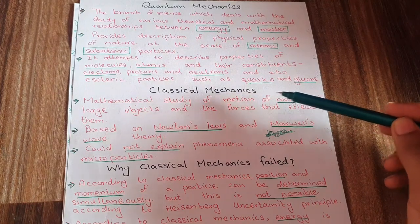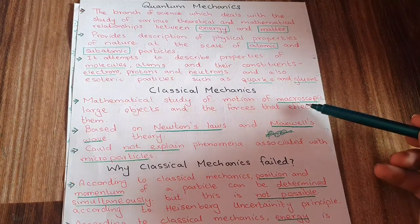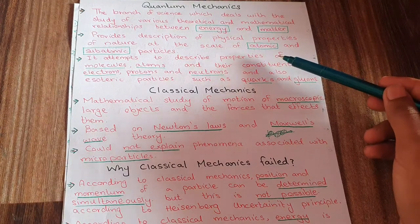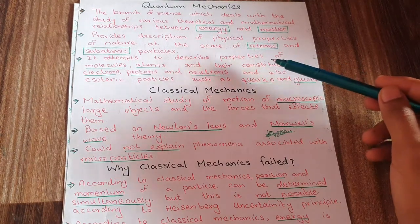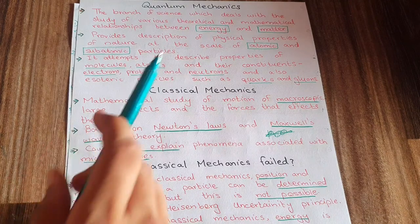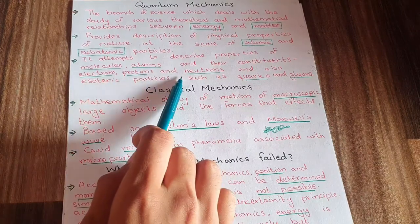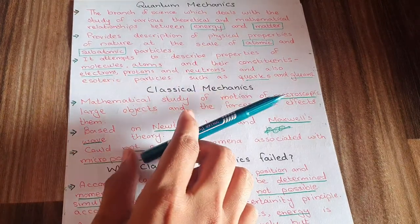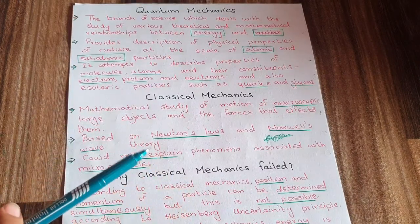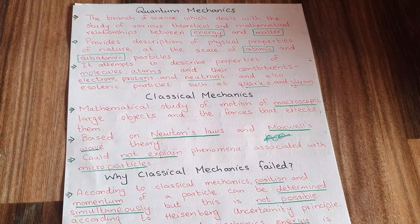Classical mechanics applies to macroscopic particles — everyday objects. Quantum mechanics applies to atomic and subatomic particles, describing the nature and physical properties of atoms, molecules, electrons, protons, neutrons, quarks, and gluons.